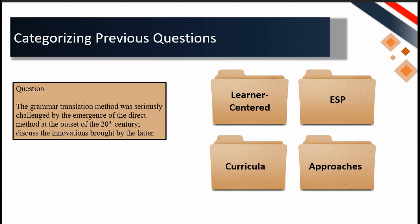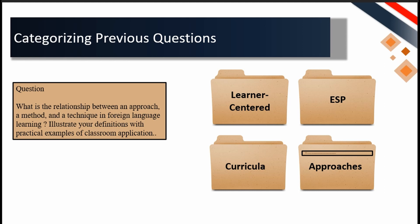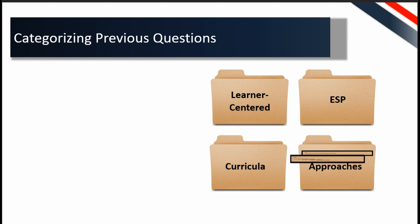As I said, if you remember from my last video — and you should check that out if you haven't — this step has to be done all at once. You should not stop, because what we are doing here is trying to have a broad view of all the questions and see how they are related. We need to categorize with approaches, and we can see another question: 'What is the relationship between an approach, a method, and a technique in foreign language learning? Illustrate your definition with practical examples of classroom application.' This question also has a link to approaches, so we categorize it in that folder. In this way, we are ensuring we are covering so many concepts.